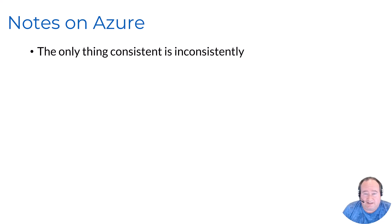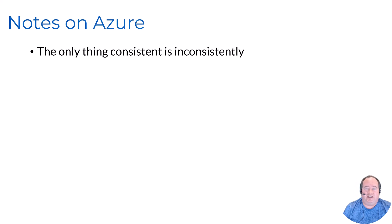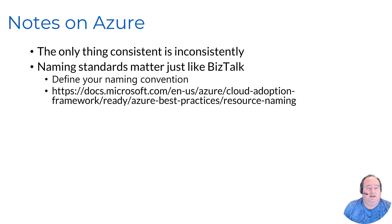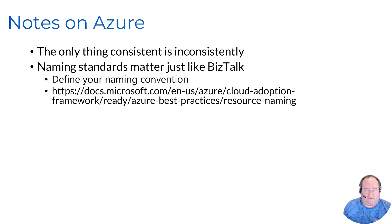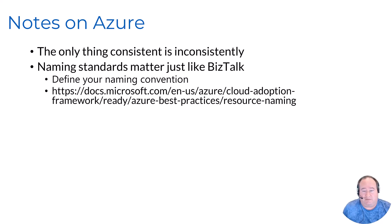Some more general notes on Azure itself. The only thing I've noticed that's consistent is inconsistency — things constantly are changing: new services being added, designers being updated, look and feel changing. If you step away for a month or two and come back, you will notice a lot of things that are different. Naming standards matter just as much in Azure as they did in BizTalk Server. The names you see in some windows are so tiny, just like BizTalk. Here's a link to one naming standard Microsoft has put out — the only wrong naming standard, in my opinion, is to not have one.